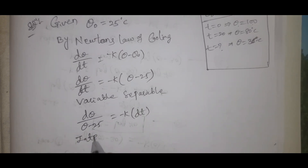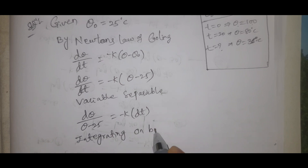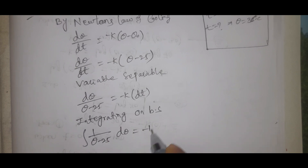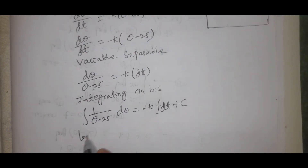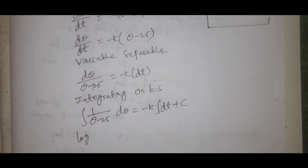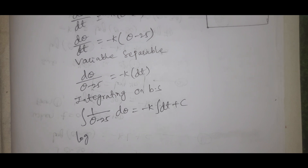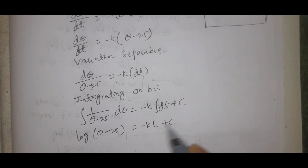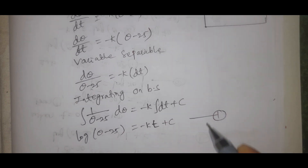Integrating both sides: integral of 1 by (theta minus 25) d-theta equals minus k integral dt plus c. Using the standard result that integral of 1/x dx equals log x, we get: log(theta minus 25) equals minus kt plus c. This is equation number 1.